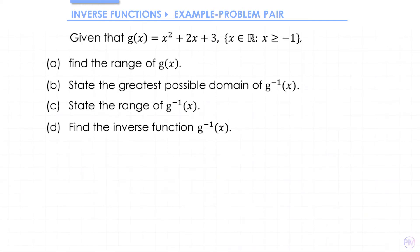In this example we're going to be finding the inverse of a quadratic function. We have g(x) = x² + 2x + 3, and the domain has been restricted to x ≥ -1 so that we're working with a one-to-one function.